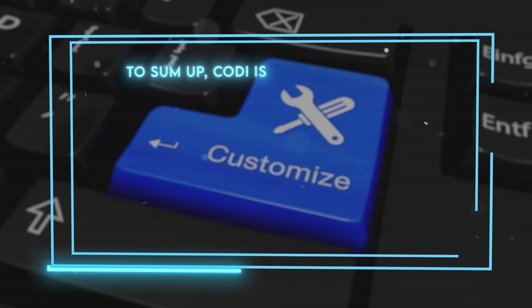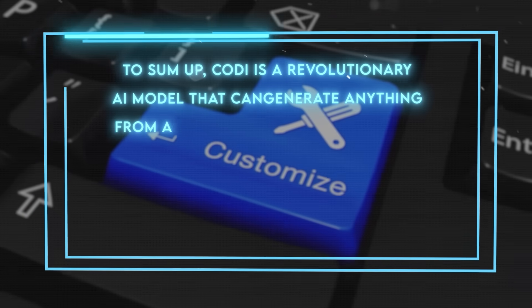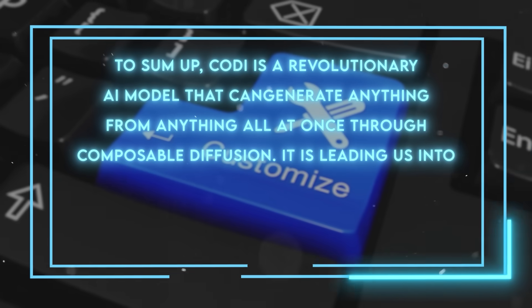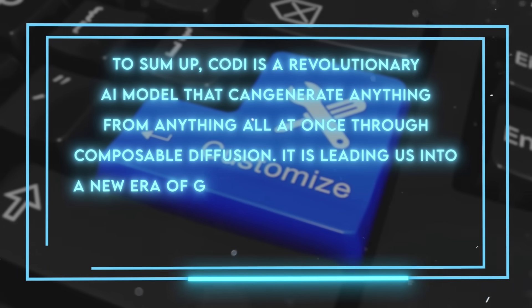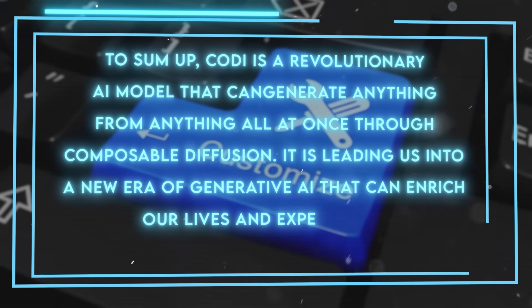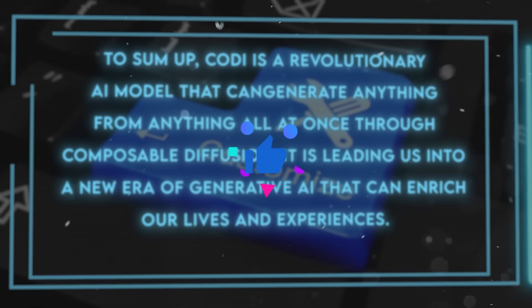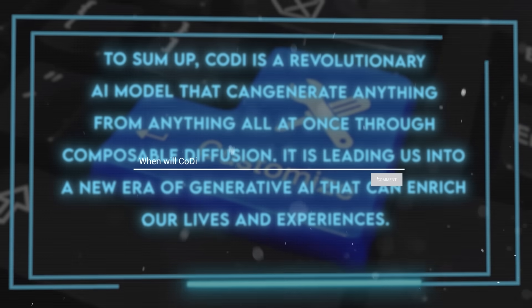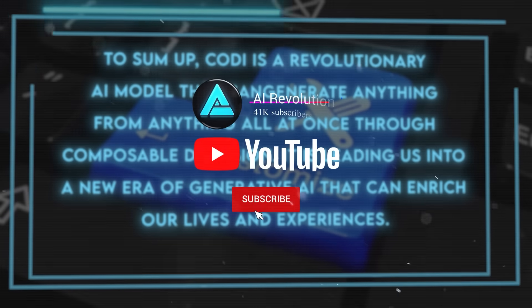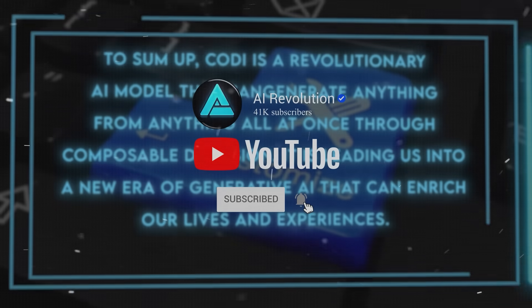To sum up, CODI is a revolutionary AI model that can generate anything from anything all at once through composable diffusion. It is leading us into a new era of generative AI that can enrich our lives and experiences. I really hope you liked the video and found out something cool about CODI. Don't forget to hit the like button and subscribe for more content on AI. Thank you for watching and I'll see you next time.